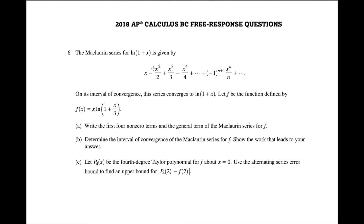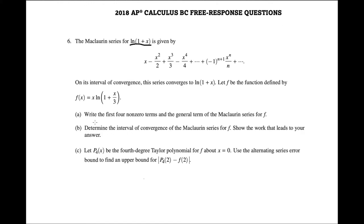This problem is all about Taylor series, or Maclaurin series. We're told they've given us the Maclaurin series for ln(1+x). Now we're defining the function f to be x·ln(1+x/3). The first thing we're being asked is to write the first four non-zero terms and the general term of the Maclaurin series of f.